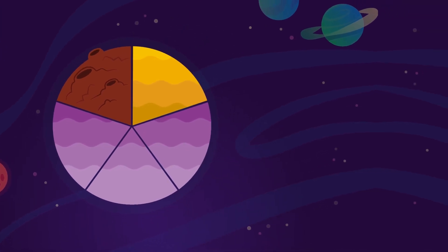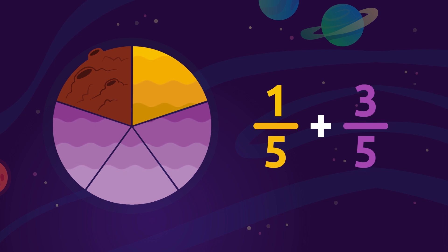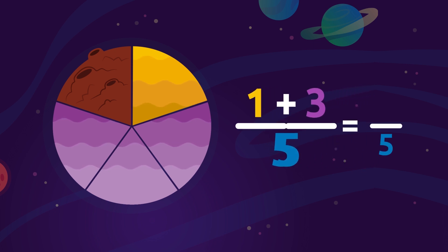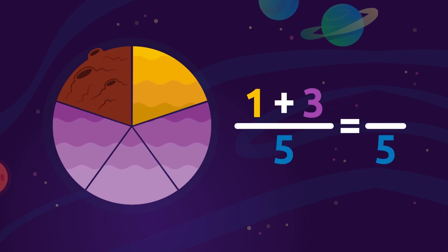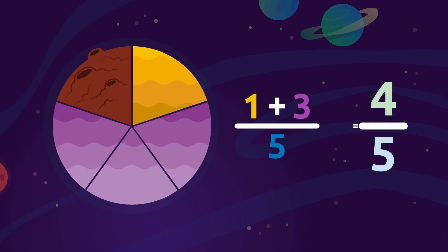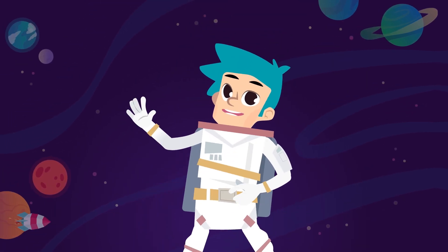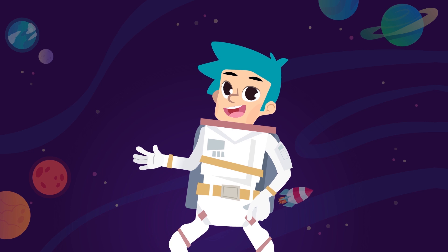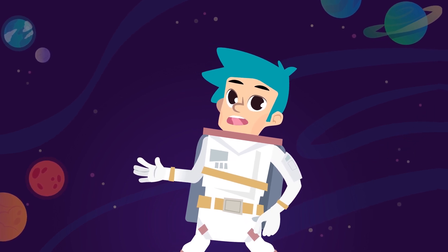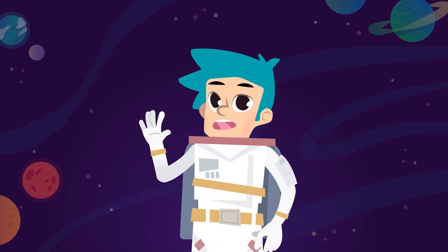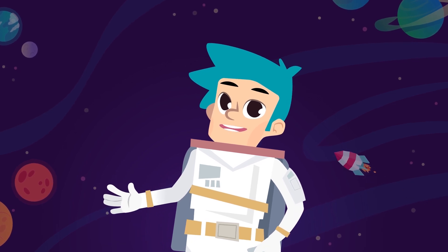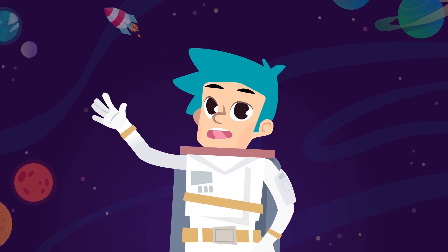To find out, we add the fractions: 1 over 5 plus 3 over 5. In the result, we leave the common denominator, then add the numerators: 1 plus 3 equals 4. The result is that four-fifths of the planet are covered with water. Now you know how to add fractions with the same denominator. Little by little, you're going to become math experts — keep up the good work!